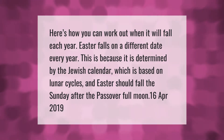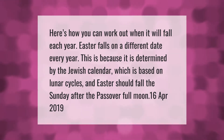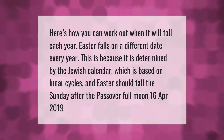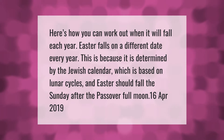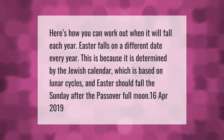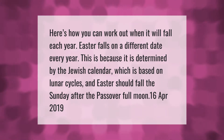Here's how you can work out when Easter will fall each year. Easter falls on a different date every year because it is determined by the Jewish calendar, which is based on lunar cycles. Easter should fall on the Sunday after the Passover full moon — for example, April 16th, 2019.